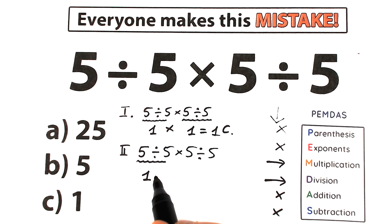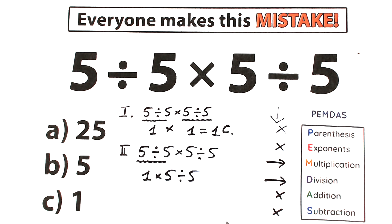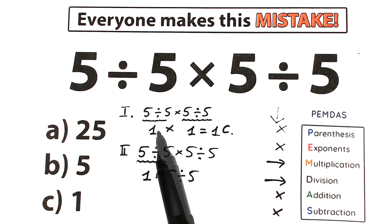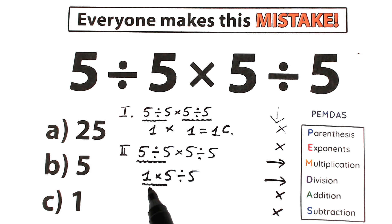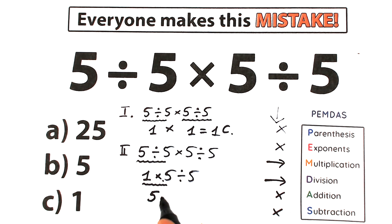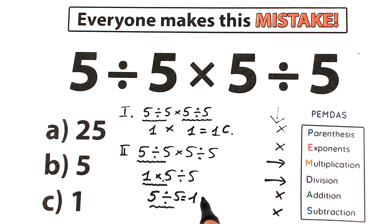After that first step we have: 1 times 5 divided by 5. Once more, we scan for the first sign from left to right — it's multiplication. So 1 × 5 = 5. Then we have 5 divided by 5, which gives us 1. So the answer equals 1, which is Option C.